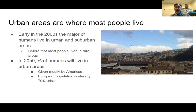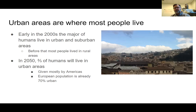As of the early 2000s, most humans on this planet now live in urban areas. Before that, most people lived in agricultural areas outside of cities, and what's happening is that people are moving out of agricultural areas into cities. That's just the proportion of people. By 2050, two thirds of humans will be living in urban areas.